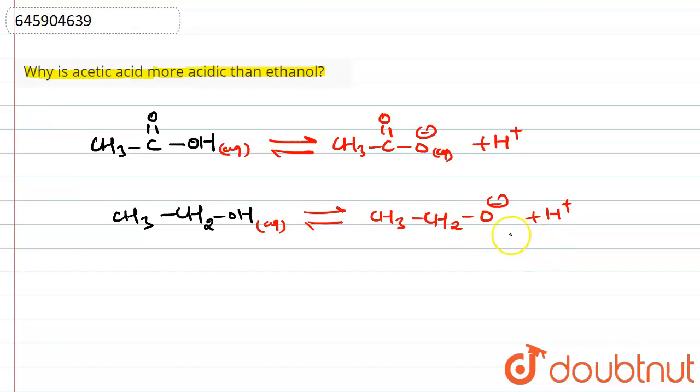For that, we have to compare the stability of these two anions, because if these anions are more stable, the reaction will move in the forward direction. In that condition, more H+ will be provided and that will be called more acid strength.